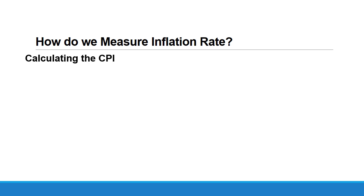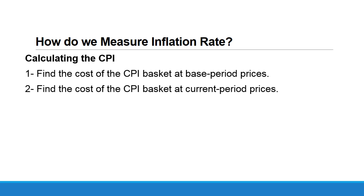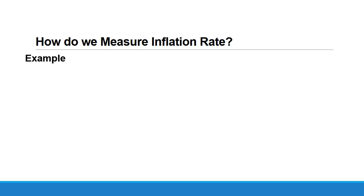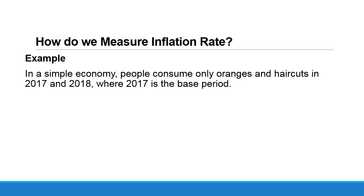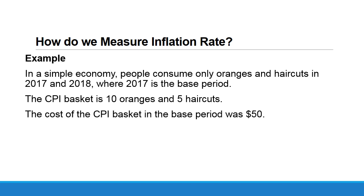Now, how do we calculate the CPI using the fixed basket of goods and services? Step one: find the cost of the CPI basket at base period prices. Step two: find the cost of the CPI basket at current period prices. Step three: calculate the CPI for the current period. For example, in a simple economy people consume only oranges and haircuts in 2017 and 2018, where 2017 is the base period. The fixed basket includes 10 oranges and 5 haircuts.